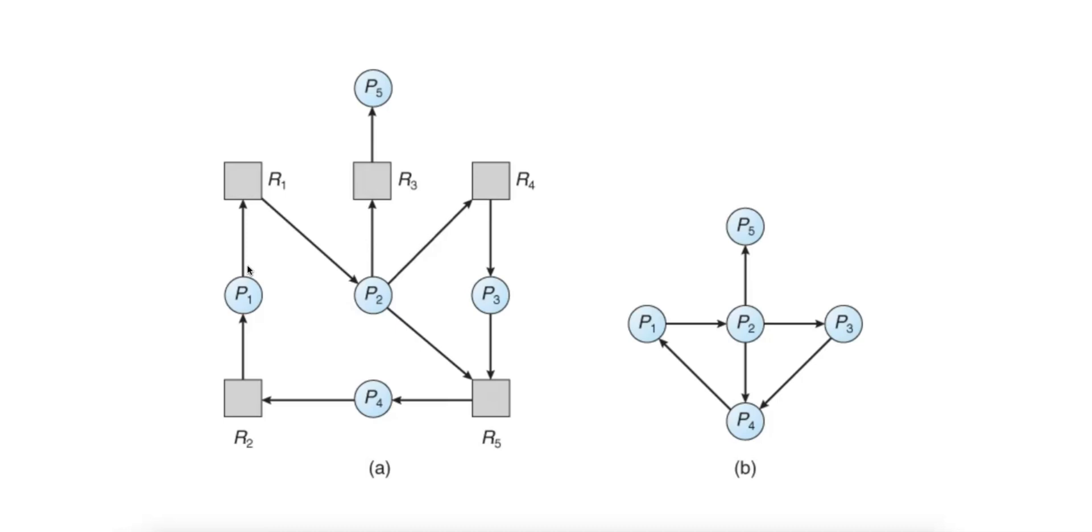There are also request edges, which are directed edges from processes to resources, for example P2 to R5, indicating that a process is requesting a resource. The presence of cycles in the resource allocation graph indicates a potential deadlock, as it suggests that processes are waiting on resources held by each other.